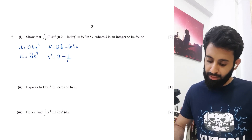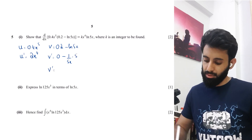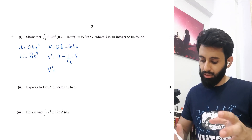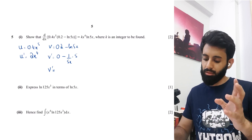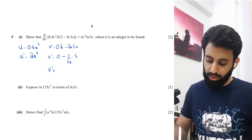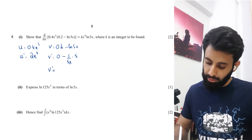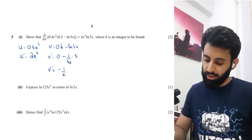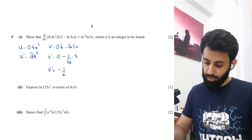v' = 0 minus the derivative of ln5x. The derivative of ln5x is (1/5x) times 5, which simplifies to minus 1/x. Make sure not to make a sign error here and double check before moving on.